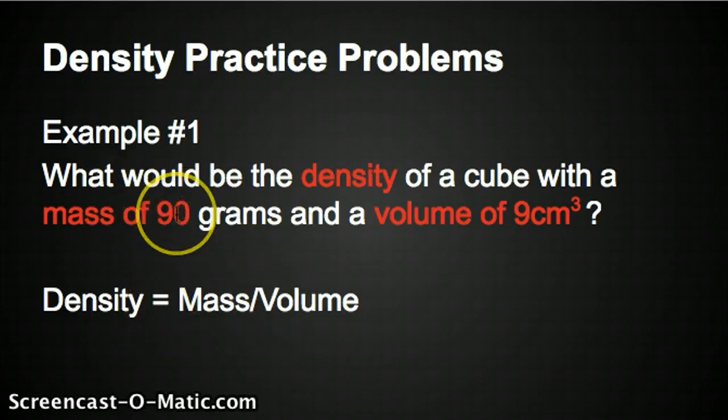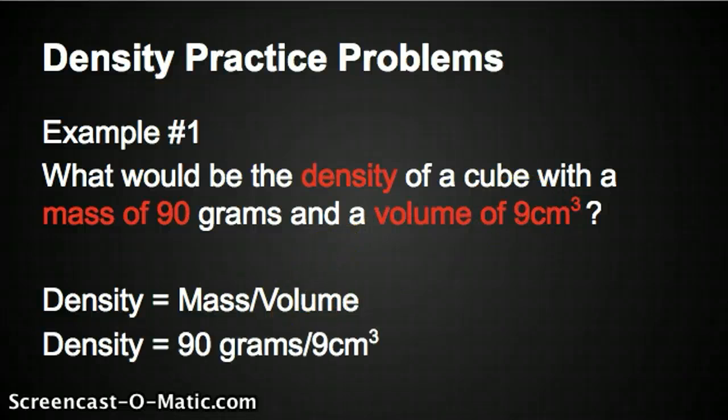We know it's 90 grams, and whenever it's grams or kilograms, that's the mass. And the volume is 9, so that goes here. So you set it up like this. Density equals 90 grams divided by 9 centimeters cubed. And then you do simple division, 90 divided by 9. Remember you can pause this video if it's going too fast.